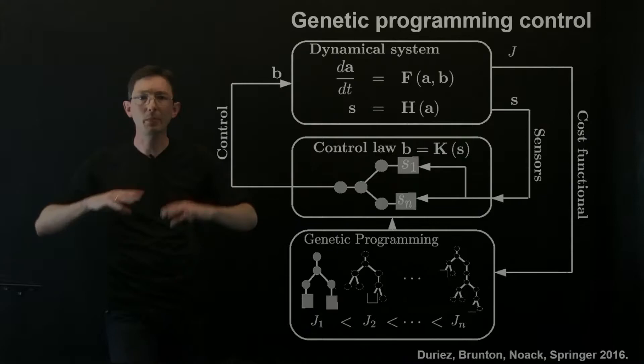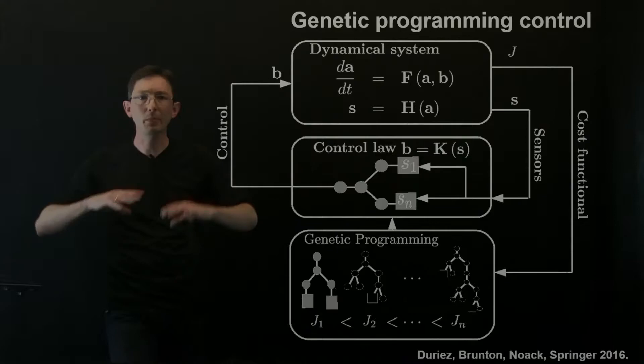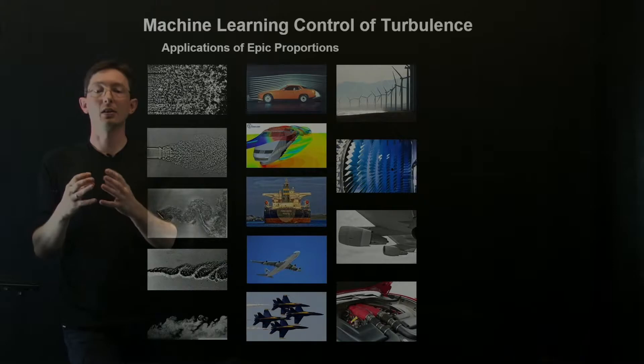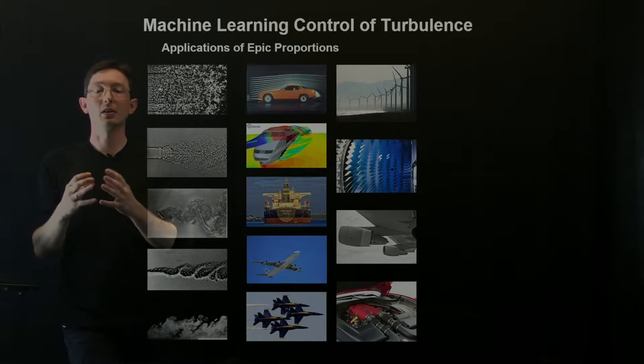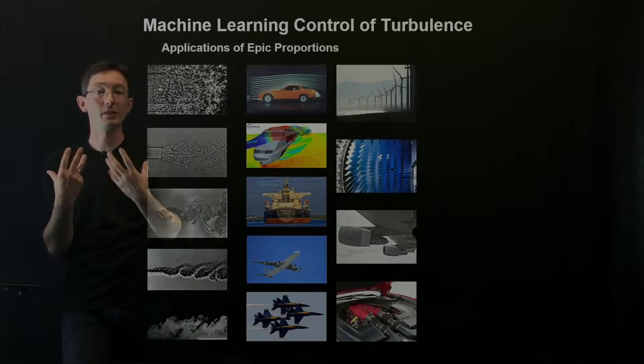But the basic idea is that the kind of big picture goal is machine learning control of turbulence. And so turbulent fluid dynamics are a high dimensional, nonlinear, multi-scale problem. So they're governed by equations that we do know, the Navier-Stokes equations. But to simulate or represent the solutions, we might need millions or billions of degrees of freedom.